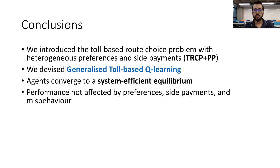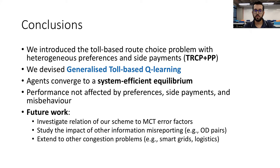In conclusion, in this work we presented an extended version of the road choice problem that accommodates heterogeneous preferences and side payments. We also devised the generalized Toll-Based Q-learning algorithm, which is guaranteed to converge to a system-efficient equilibrium, even in the more challenging version of the road choice problem. Another important feature is that its performance is not sensitive to heterogeneous preferences, side payments, or misbehavior. For future work, we would like to investigate how our toll scheme is affected by MCT error factors, how other forms of information misreporting could impact our approach, and extend the algorithm to deal with other congestion-like problems such as smart grids and logistics.